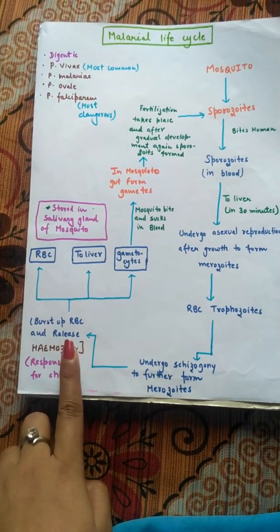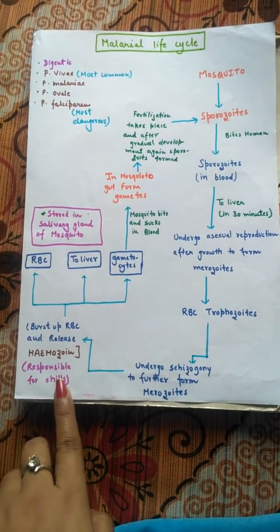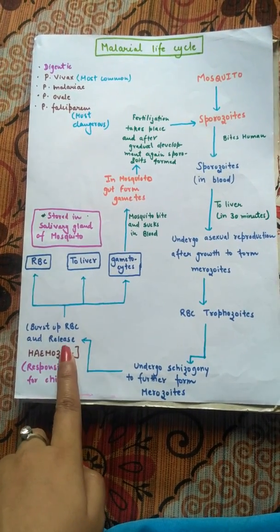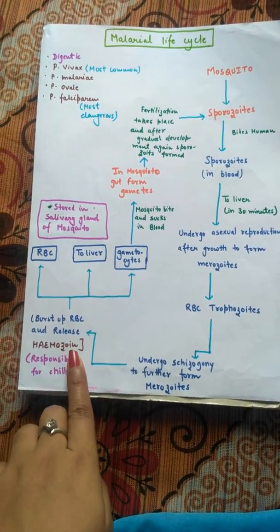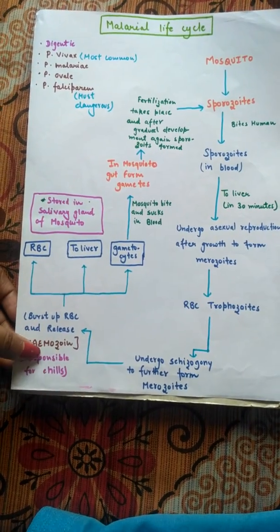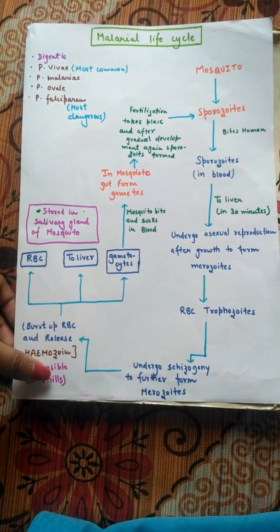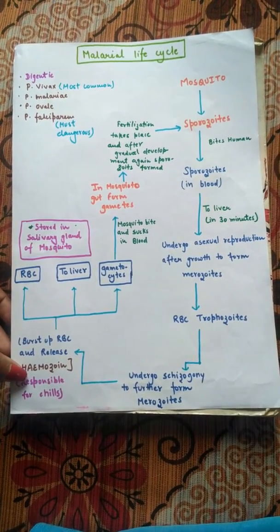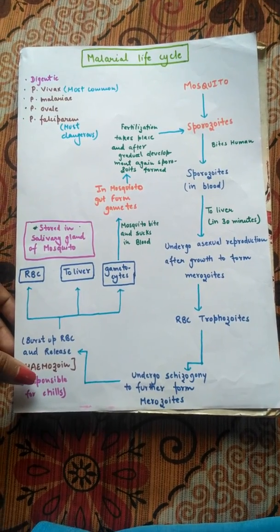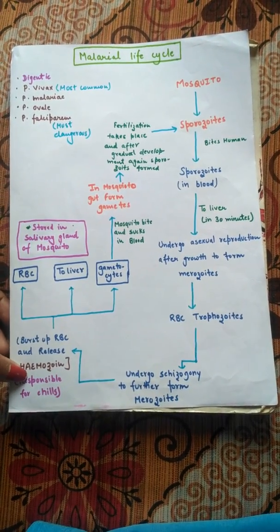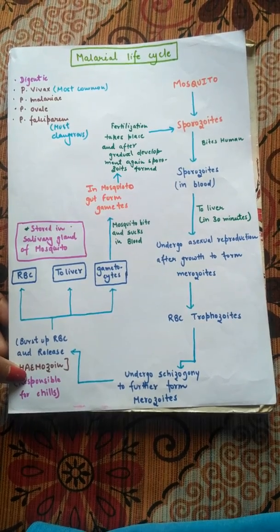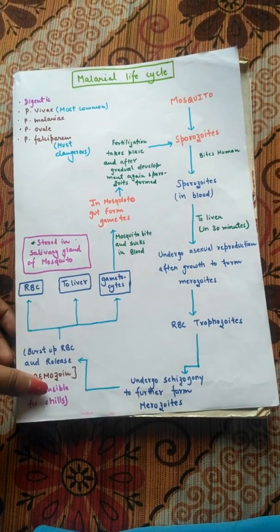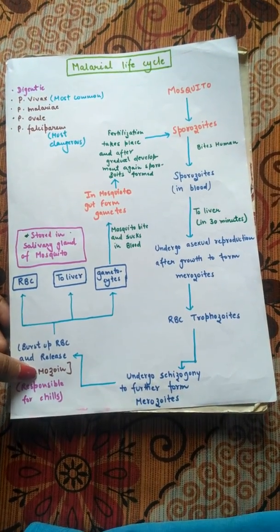Hemozoin is a very important chemical substance responsible for chills and fever during malaria. The timing of fever differs between species: in Plasmodium vivax, hemozoin is released after two days, while in Plasmodium malariae it takes three days. So hemozoin is the key substance responsible for the characteristic chills and fever of malaria.